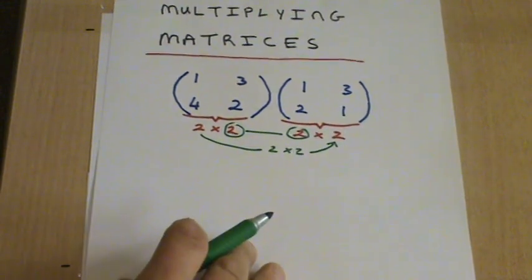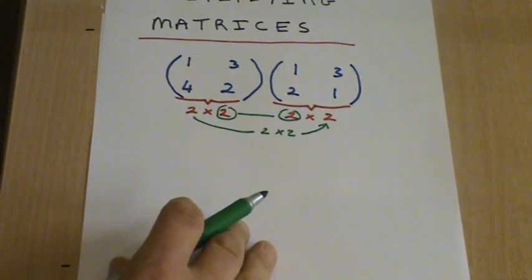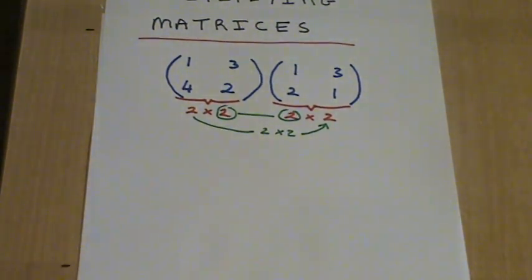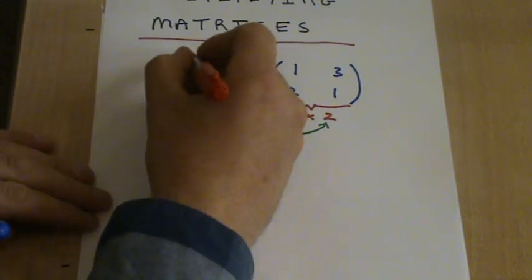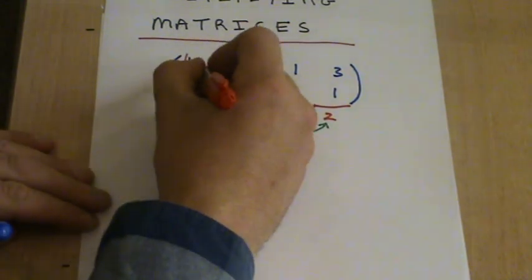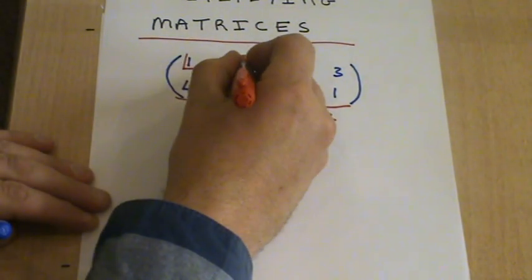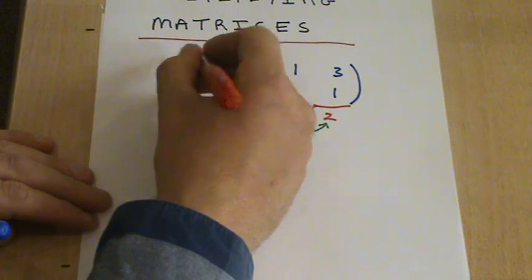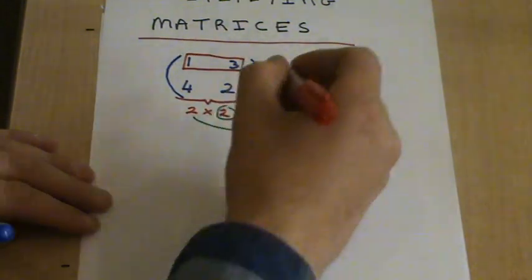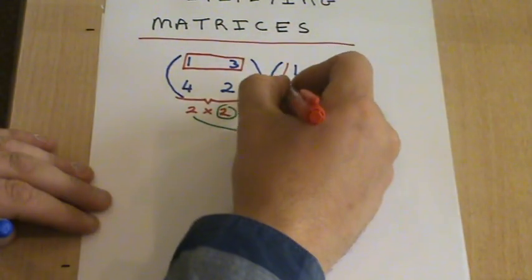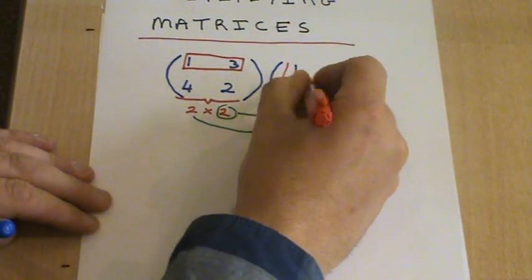When we're multiplying matrices, we always multiply a row by a column. So if you look at this first row, we're going to multiply this top row by this first column.